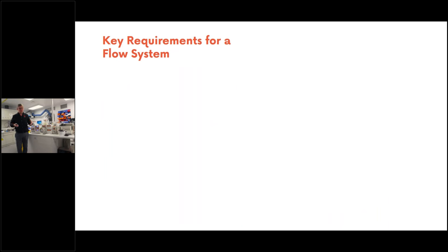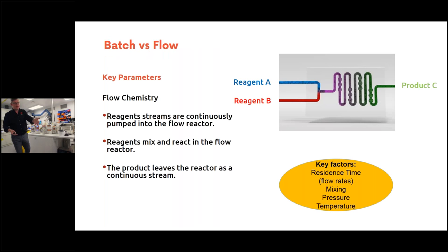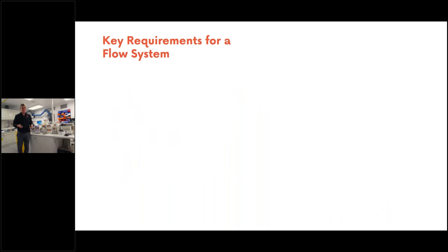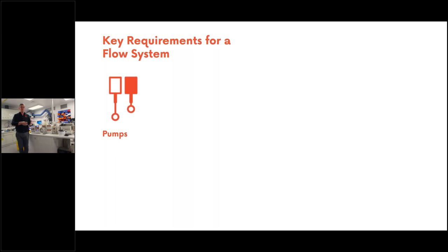What do we need for a flow chemistry system? The first requirement is a pump to introduce our reagents. The pump is arguably the most important part — if we don't have confidence in our flow rates, and the pump can't pump accurately under a wide range of chemical compatibilities, then all the advantages of controlling molar ratios and reaction times just disappear. We need something reliable with a wide dynamic range of flow rates.